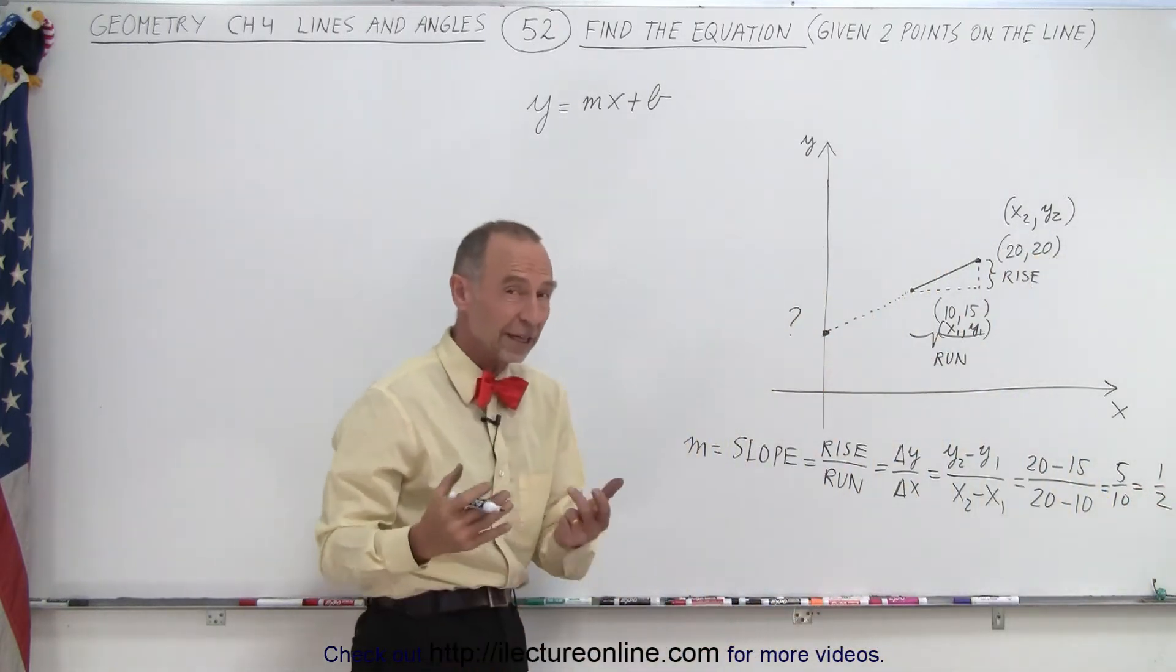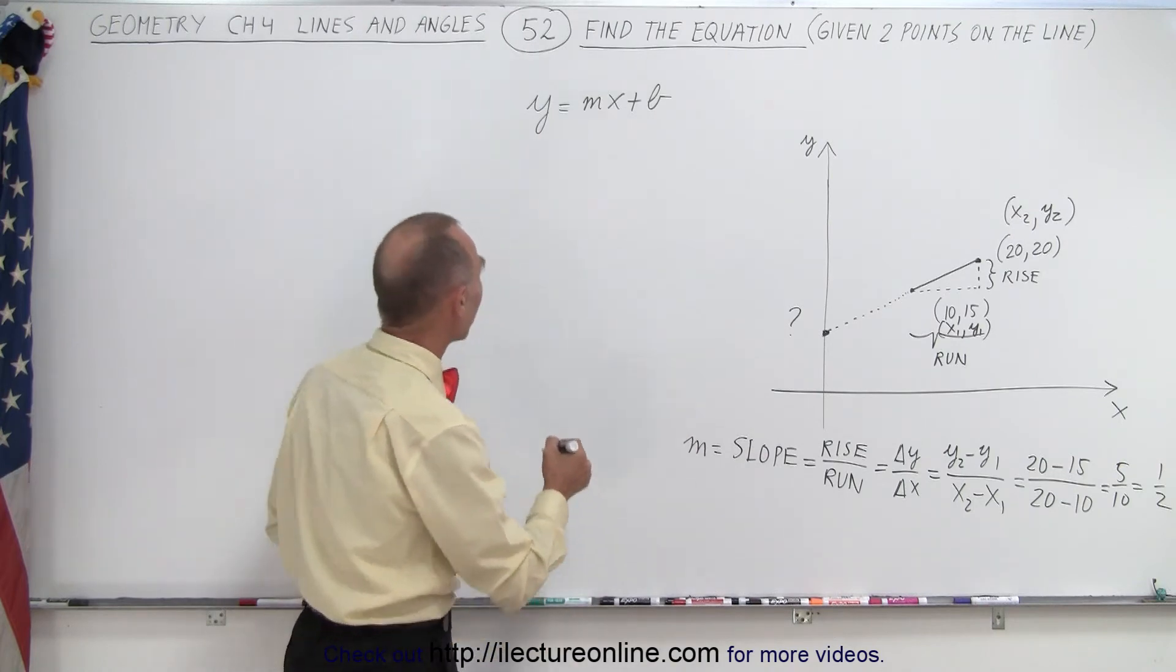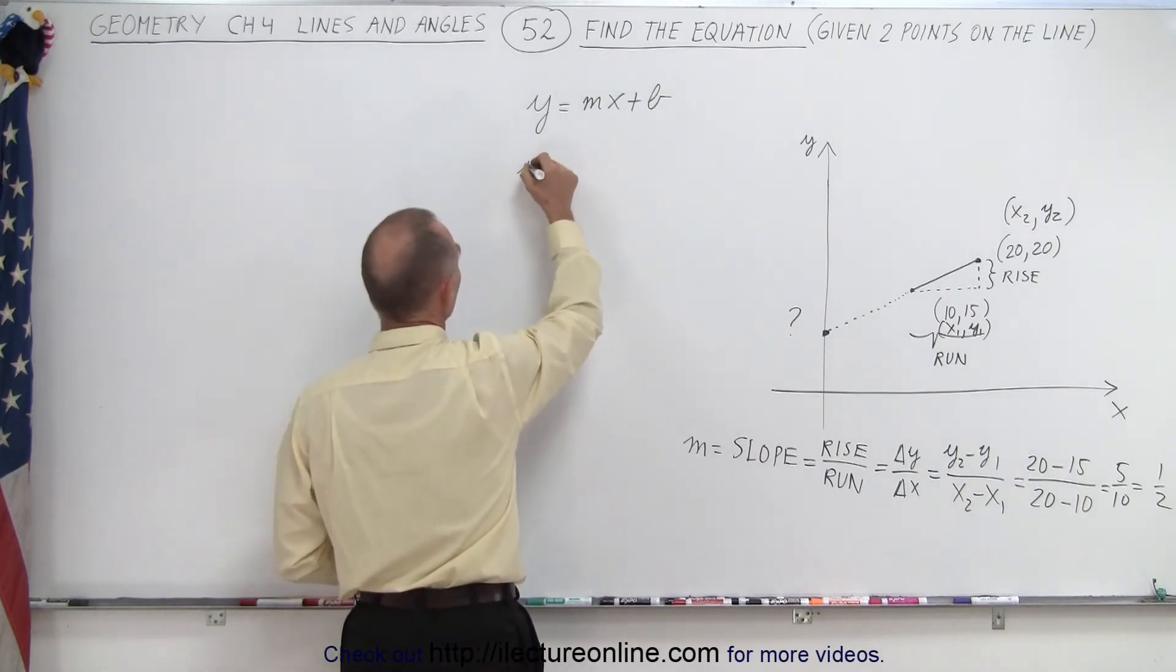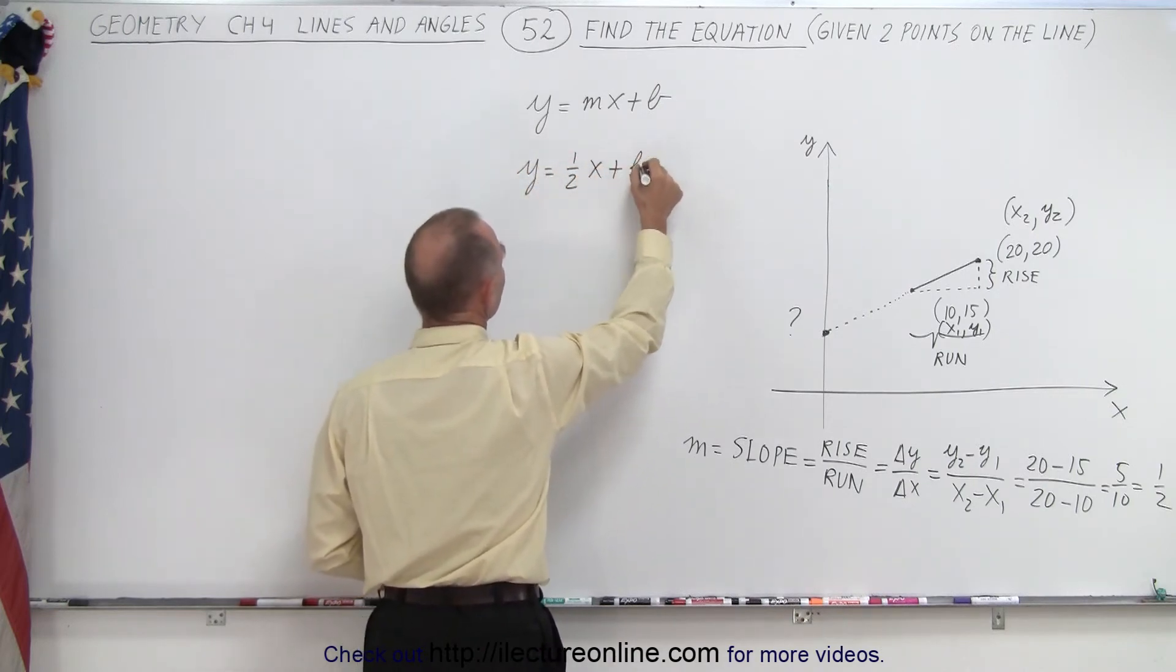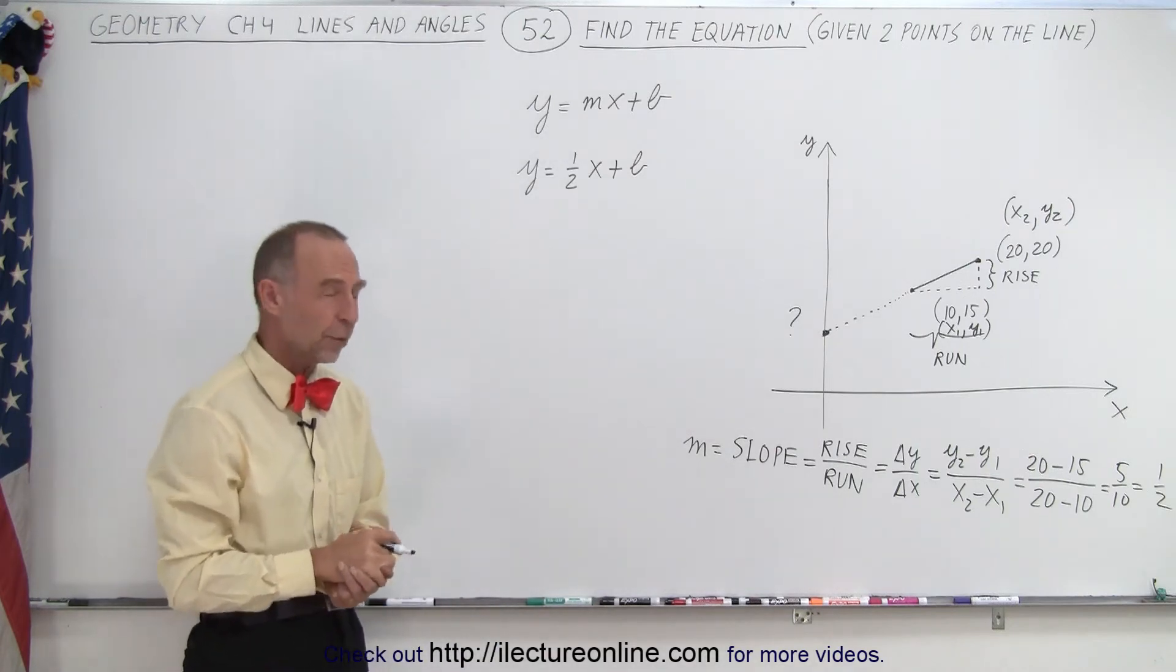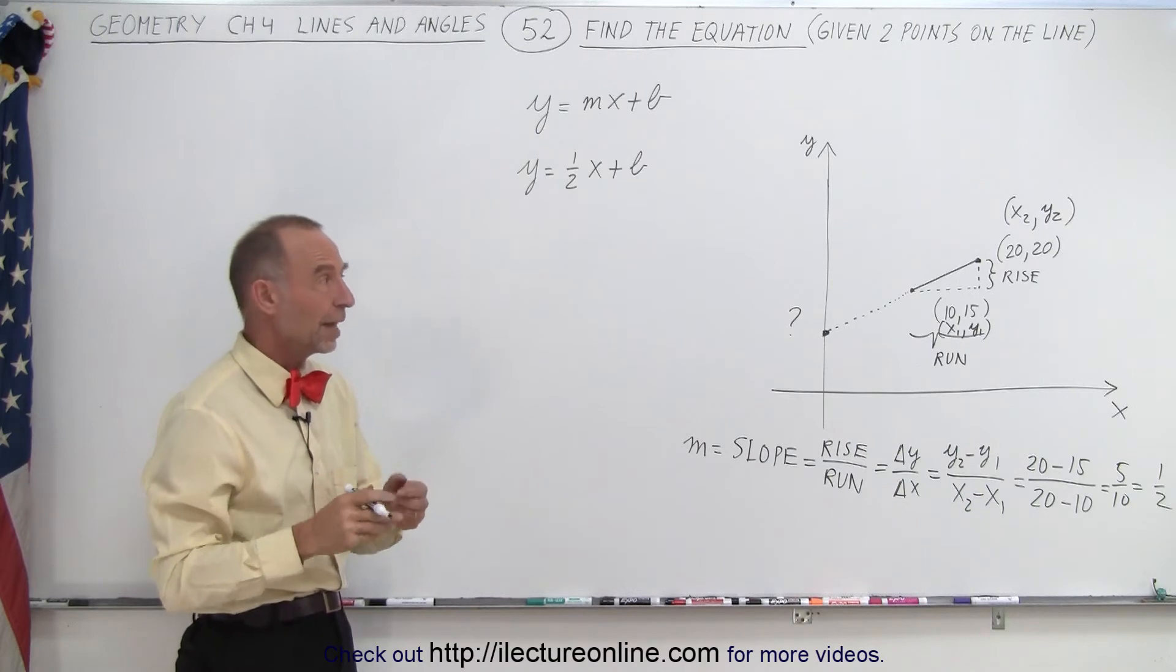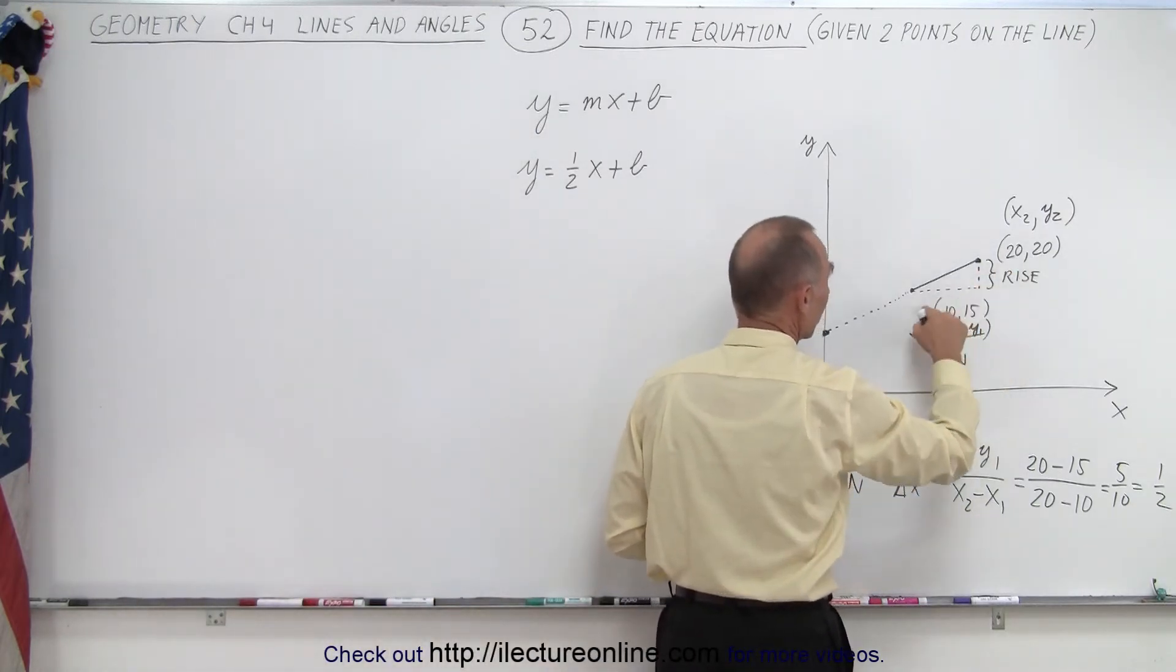So there you can see that if they give you two points, it's relatively straightforward to find the slope of the line. So we can plug that in here and we say y equals 1 half x plus b. But then how do we find b? How do we find the point where the line crosses the y-axis?